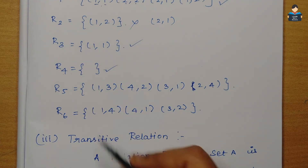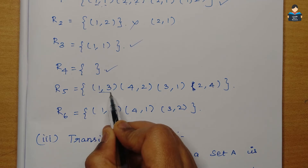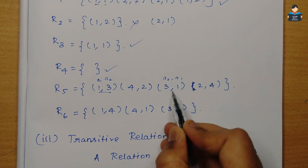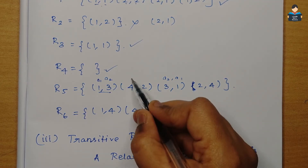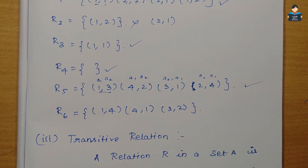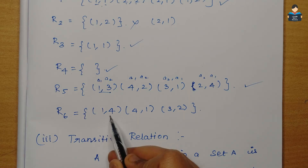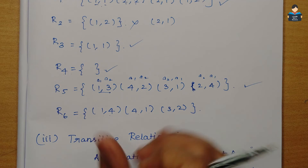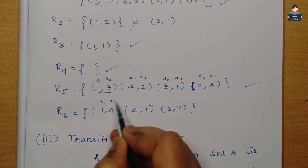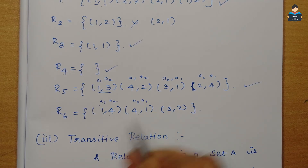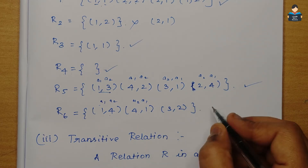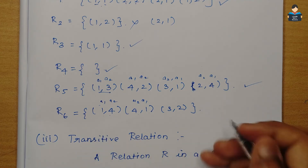R5 contains (1,3) but not (3,1), so it is not symmetric. R6 contains pairs like (4,2) and (2,4) — here (a1,a2) and (a2,a1) are both present, so this is symmetric. But (1,4) and (4,1) need to be checked as well to confirm the full relation is symmetric.